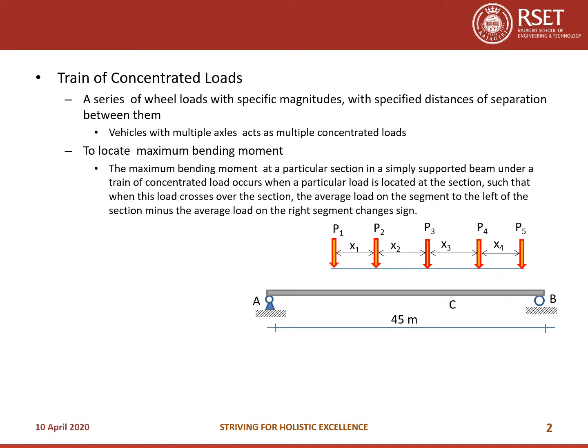The maximum bending moment at a particular section in a simply supported beam under a train of concentrated loads occurs when a particular load is located at the section such that when this load crosses over the section, the average load on the segment to the left of the section minus the average load on the segment to the right changes its sign. This is how you locate the maximum bending moment condition — which load has to be placed on section C. We will explain this with the help of a problem.